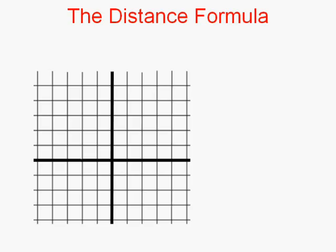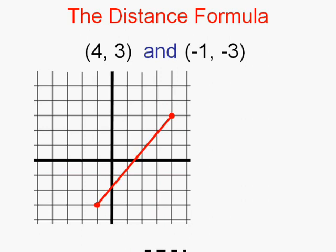Let's take two points. The point, let's see, over 4 and up 3, right? And the point negative 1, negative 3. So we'll go back 1 and down 3. And we want the distance between those two points. I want to know that exact distance, that red segment. And we'll call that distance for now x.